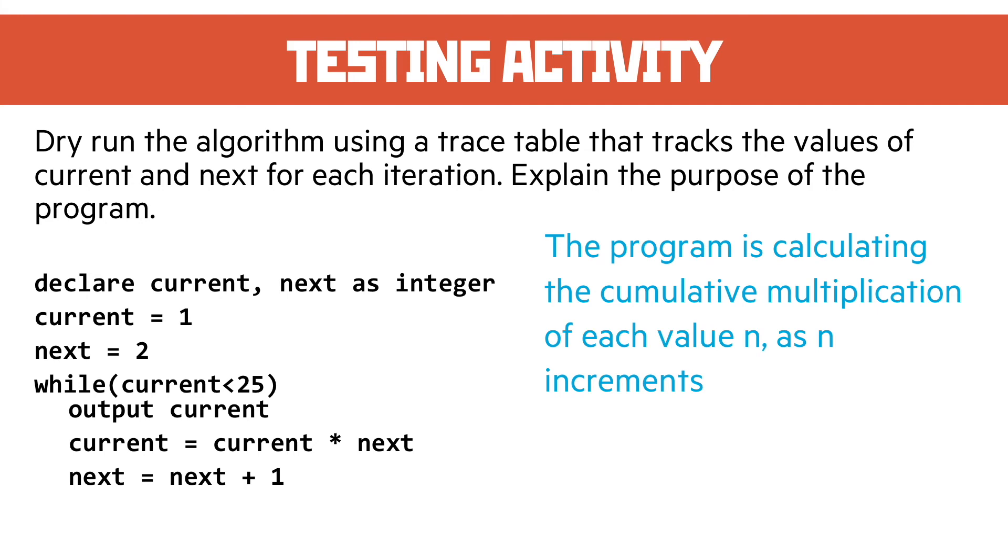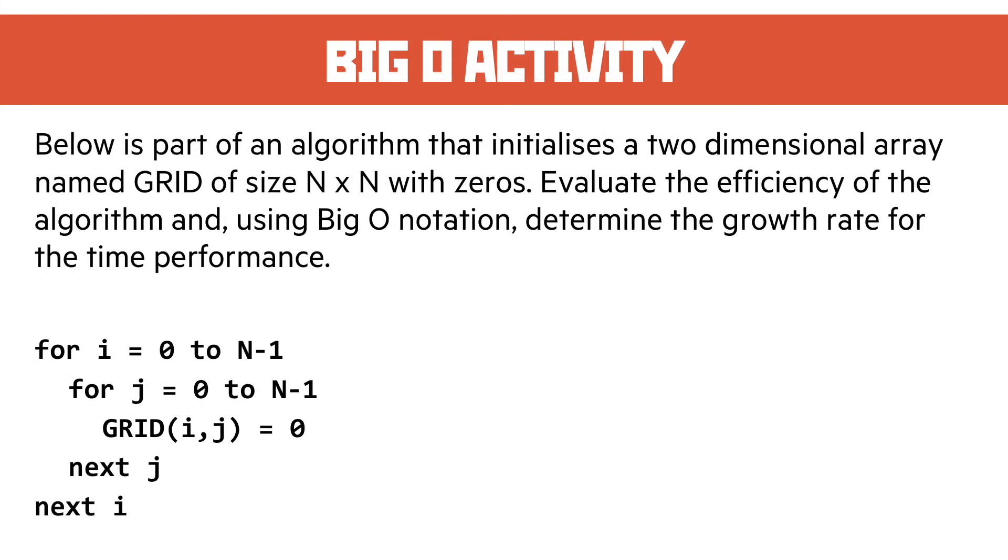The Big O activity here: below is part of an algorithm that initializes a 2D array named grid with a size of N by N and it initializes them with zeros. Evaluate the efficiency of the algorithm and using Big O determine the growth rate for the time performance.